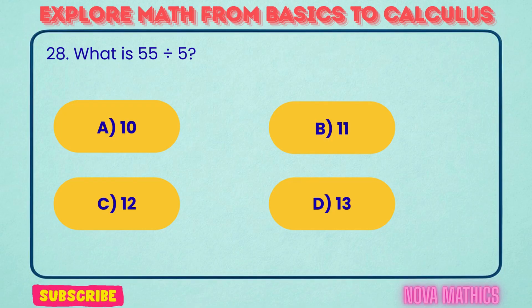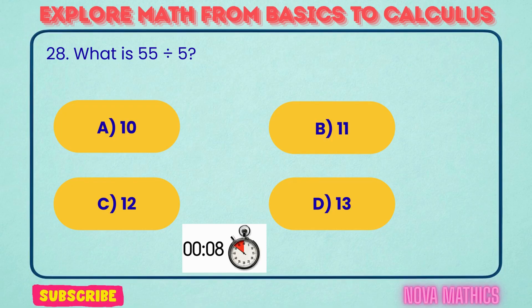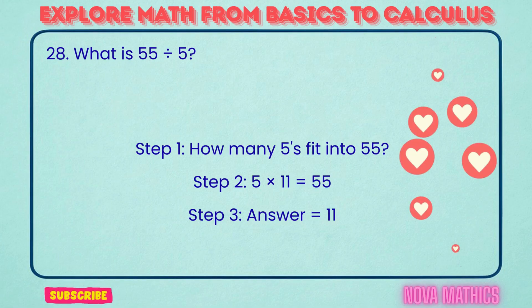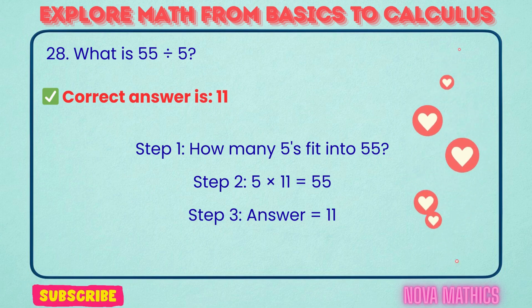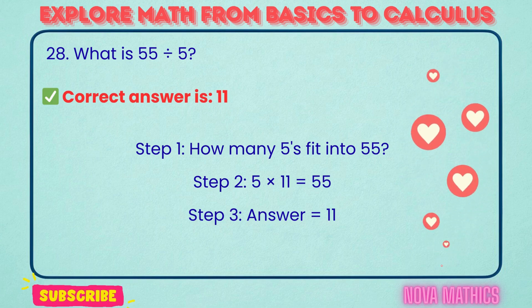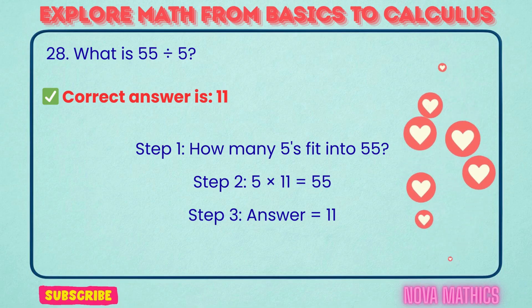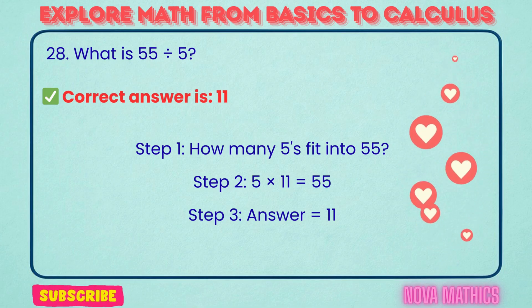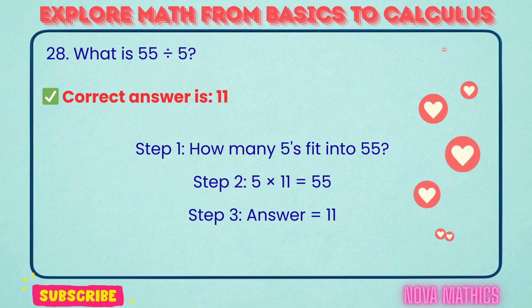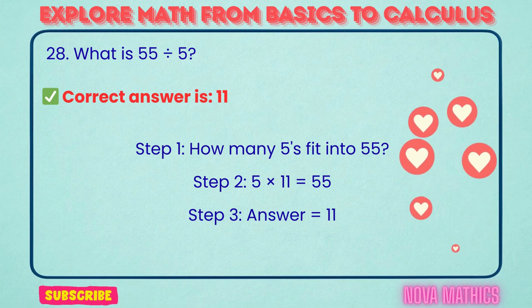28. What is 55 divided by 5? Correct answer is 11. 55 divided by 5 equals 11. We find this because 5 times 11 is 55.